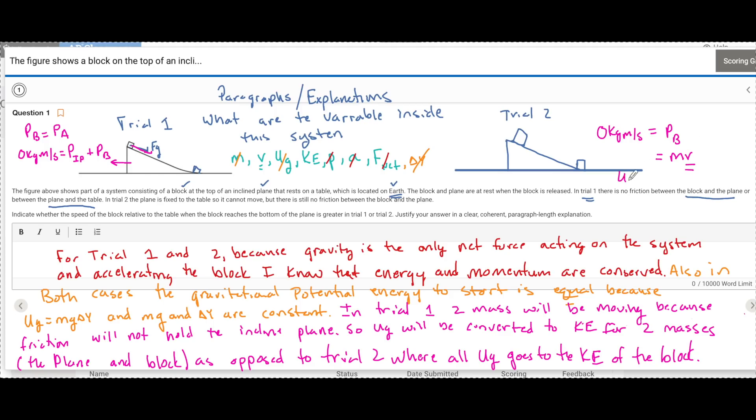This shows momentum and then I could say that Ug is going to be converted into kinetic energy of just the block where over here I have Ug that's going to be the kinetic energy of the block plus the kinetic energy of the inclined plane.